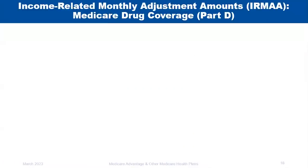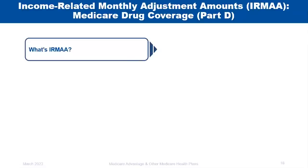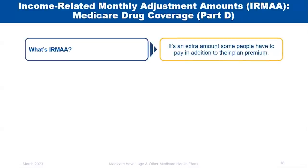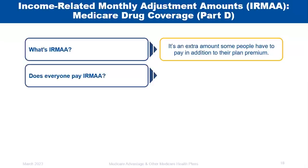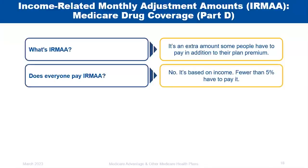The Income-Related Monthly Adjustment Amount (IRMAA) is an extra amount some people pay for Medicare Part D coverage based on their income. It's based on your tax return from two years prior. About 5% to 7% of the Medicare population pays IRMAA. It's designed to protect the Medicare trust fund.